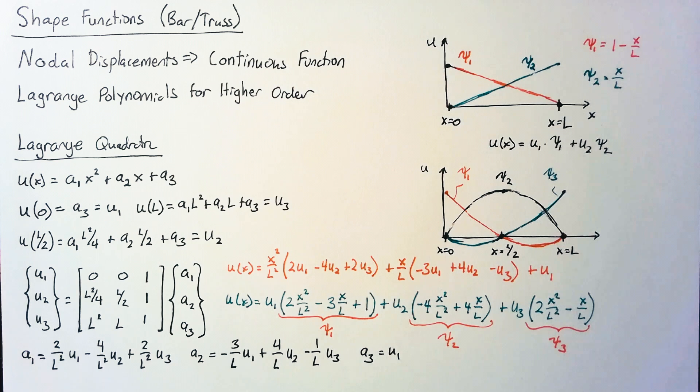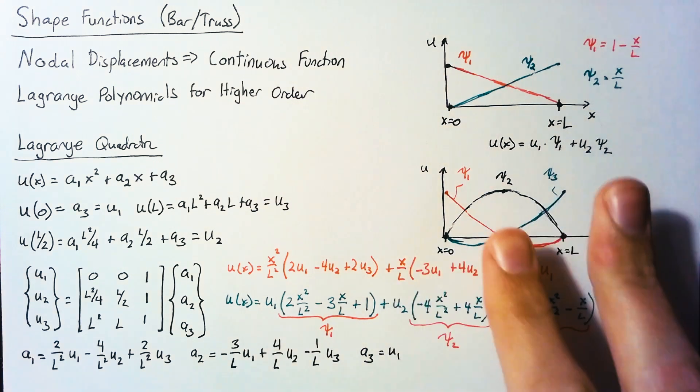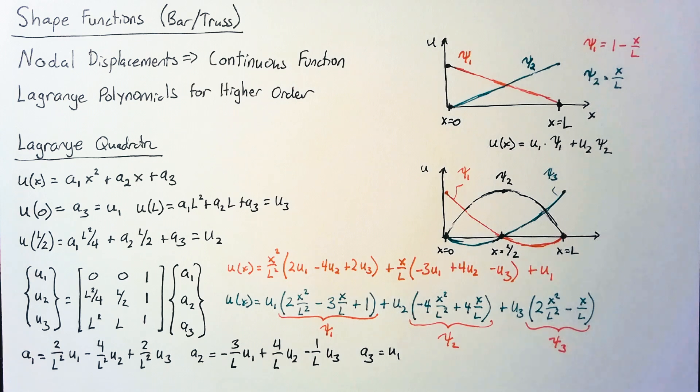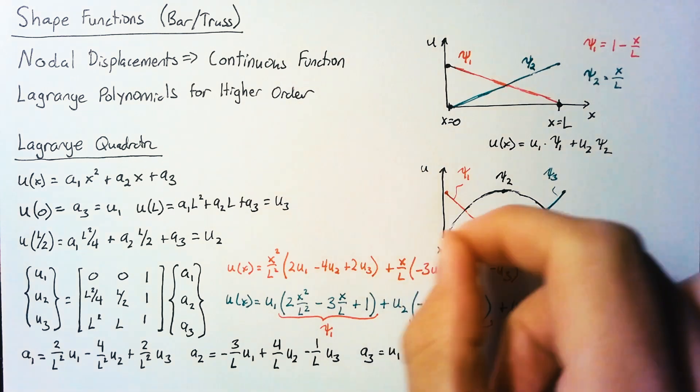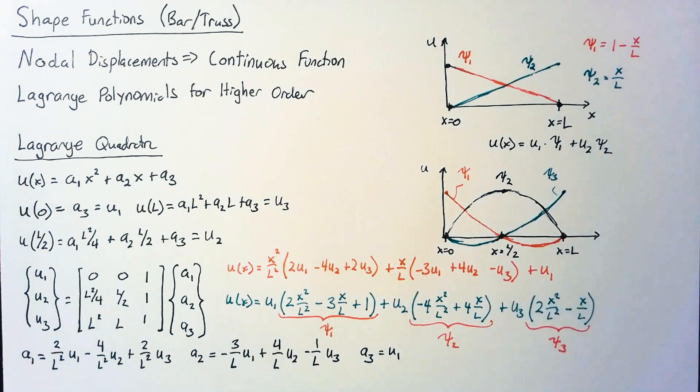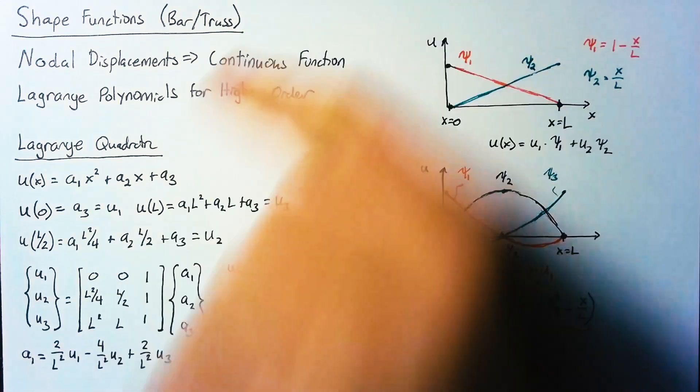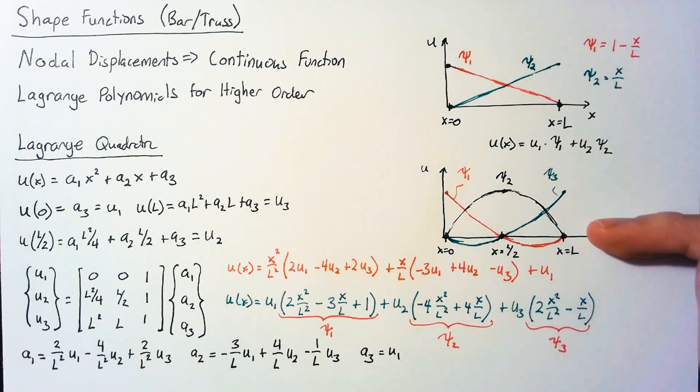So once we find our nodal displacements, we can use these shape functions to take a step back and find our displacement at any point if we need it. So that's a quick overview of shape functions, the very basic that we can use for the most basic elements, and then one step up for that most basic element.